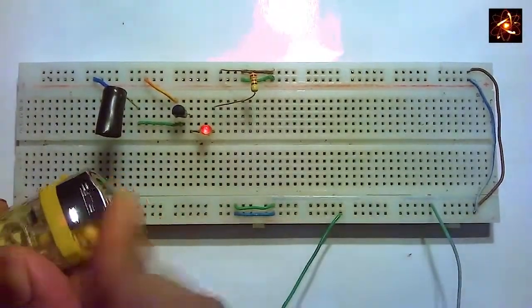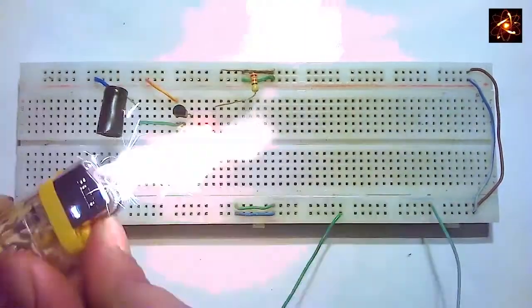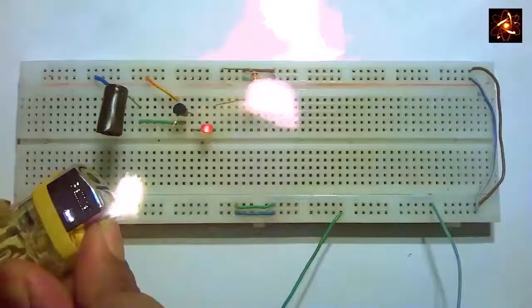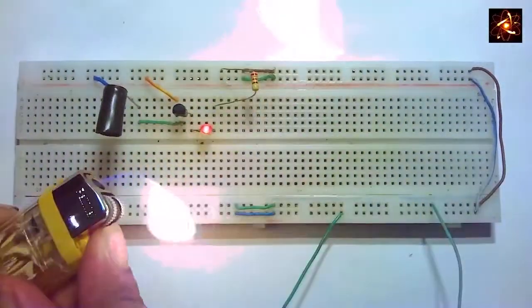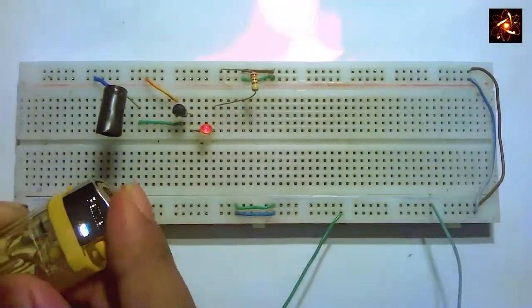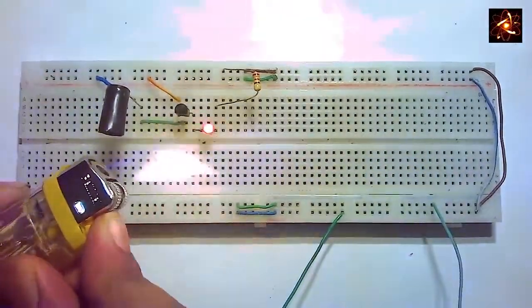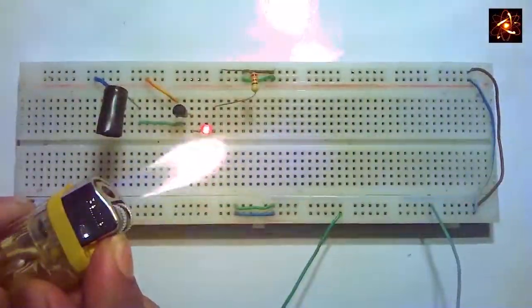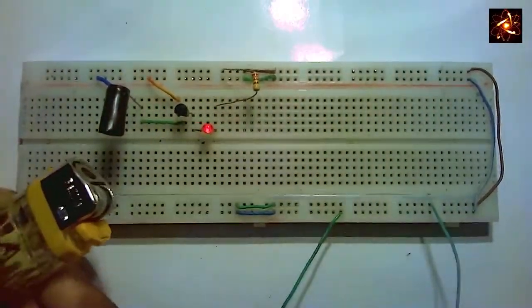When fire appears in the circuit, the IR receiver receives little amount of IR ray from the fire. We can use any kinds of fire.